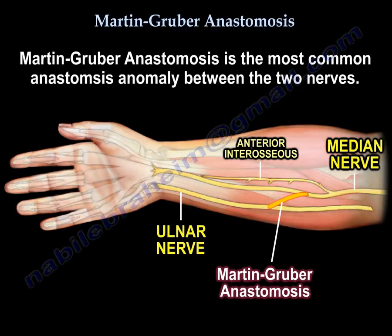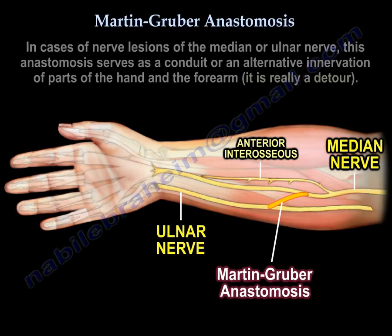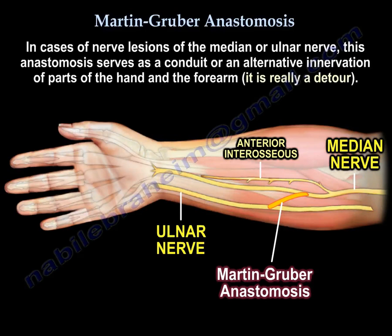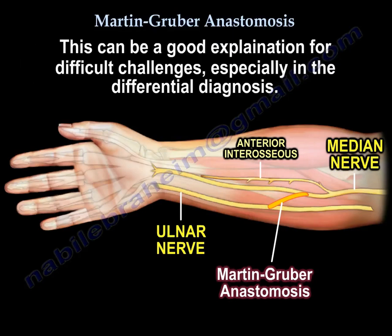This is the most common anastomosis anomaly between the two nerves. In cases of nerve lesion of the median or ulnar nerve, this anastomosis serves as a conduit or alternative innervation of parts of the hand and forearm — essentially a detour. This can be a good explanation for difficult diagnostic challenges, especially in differential diagnosis.